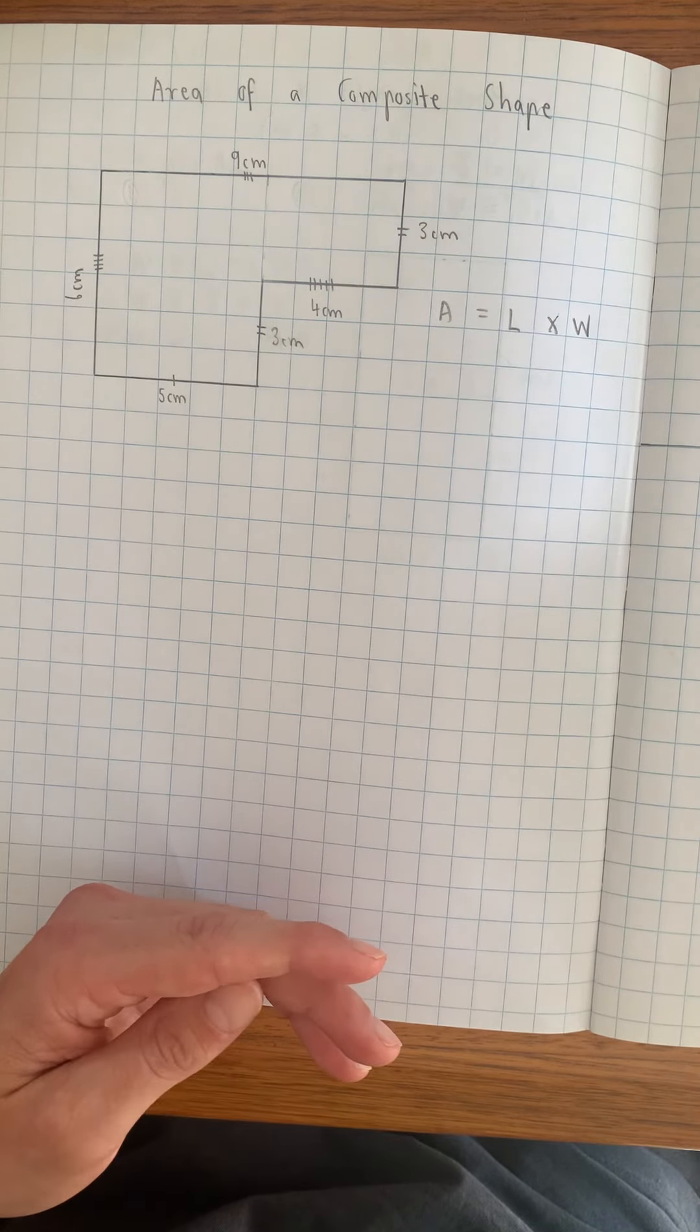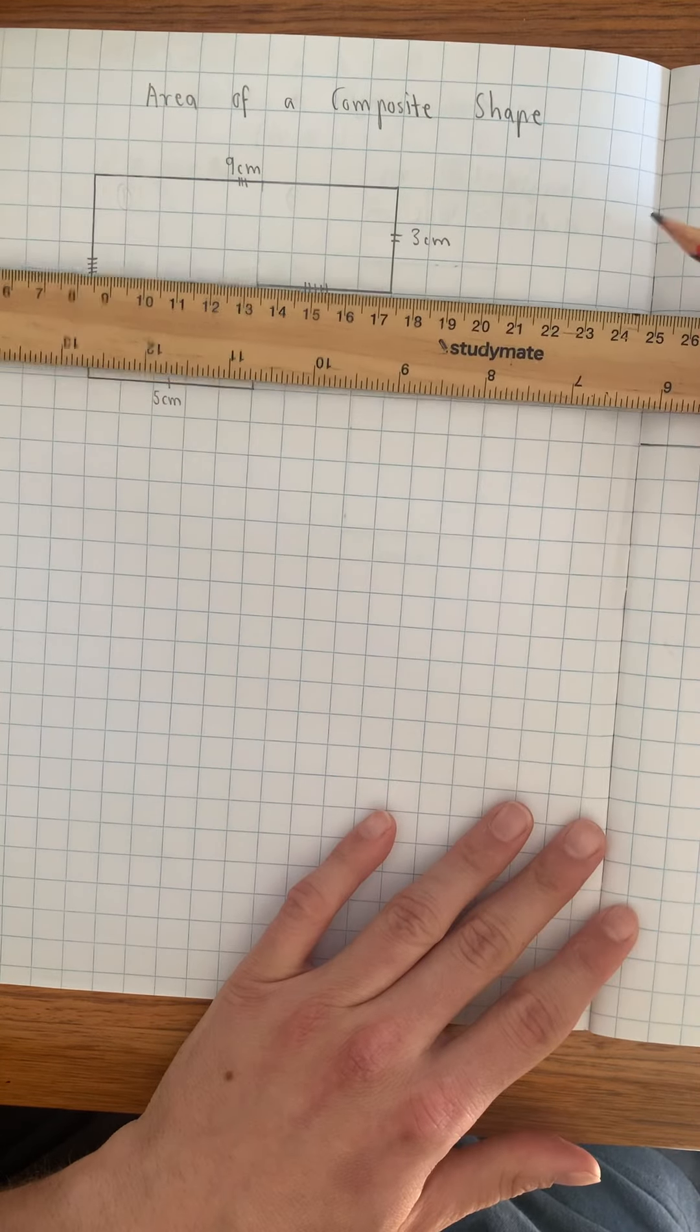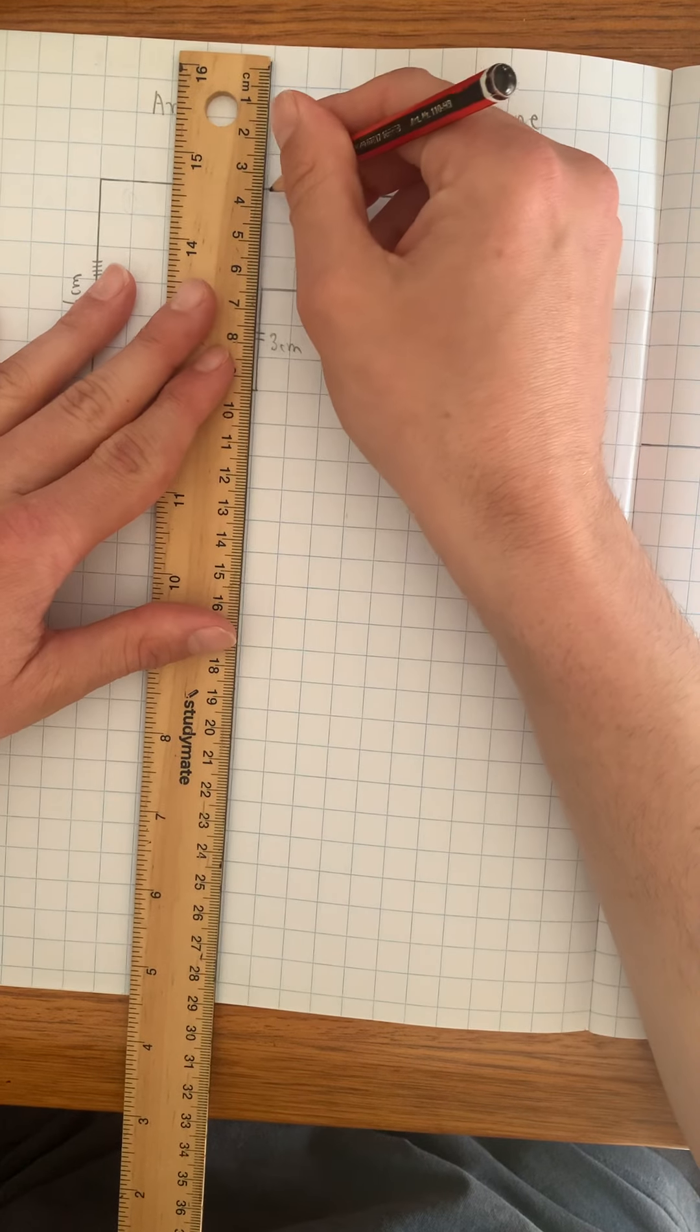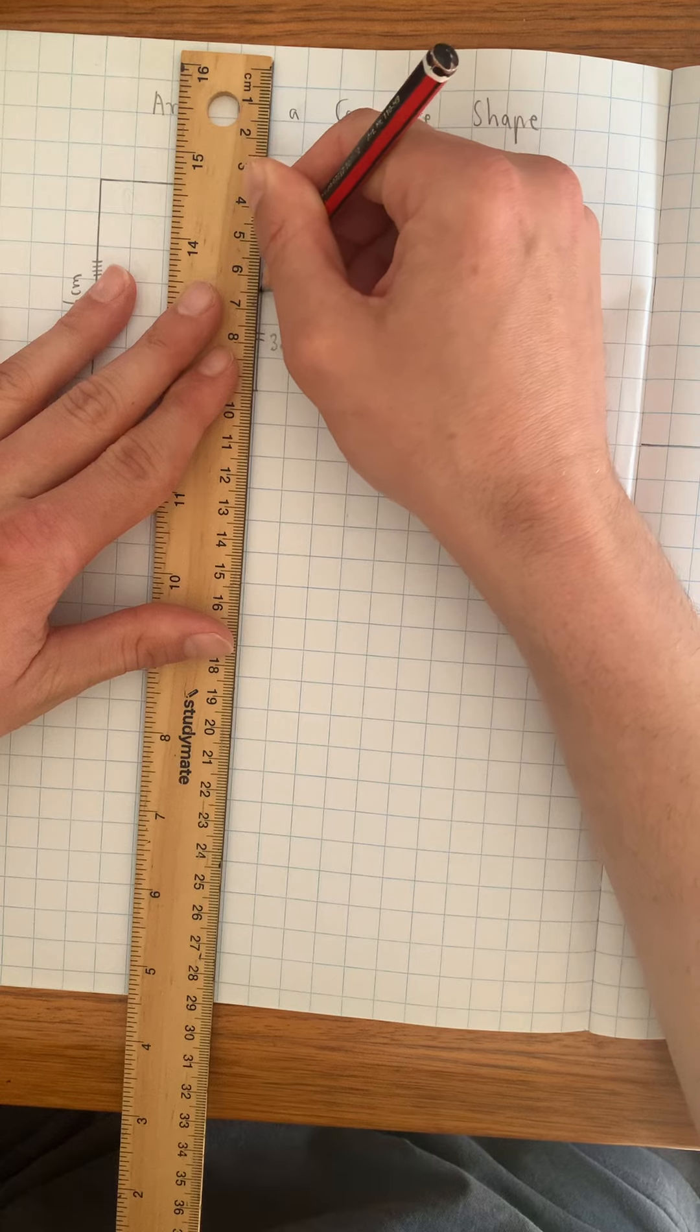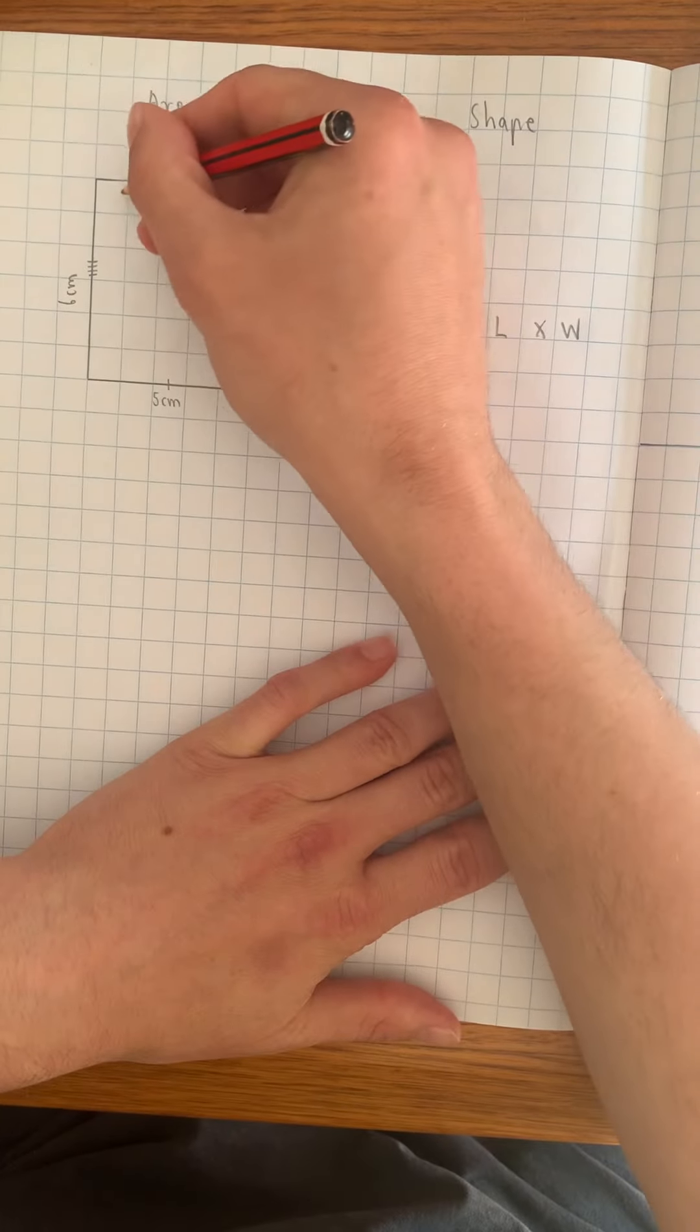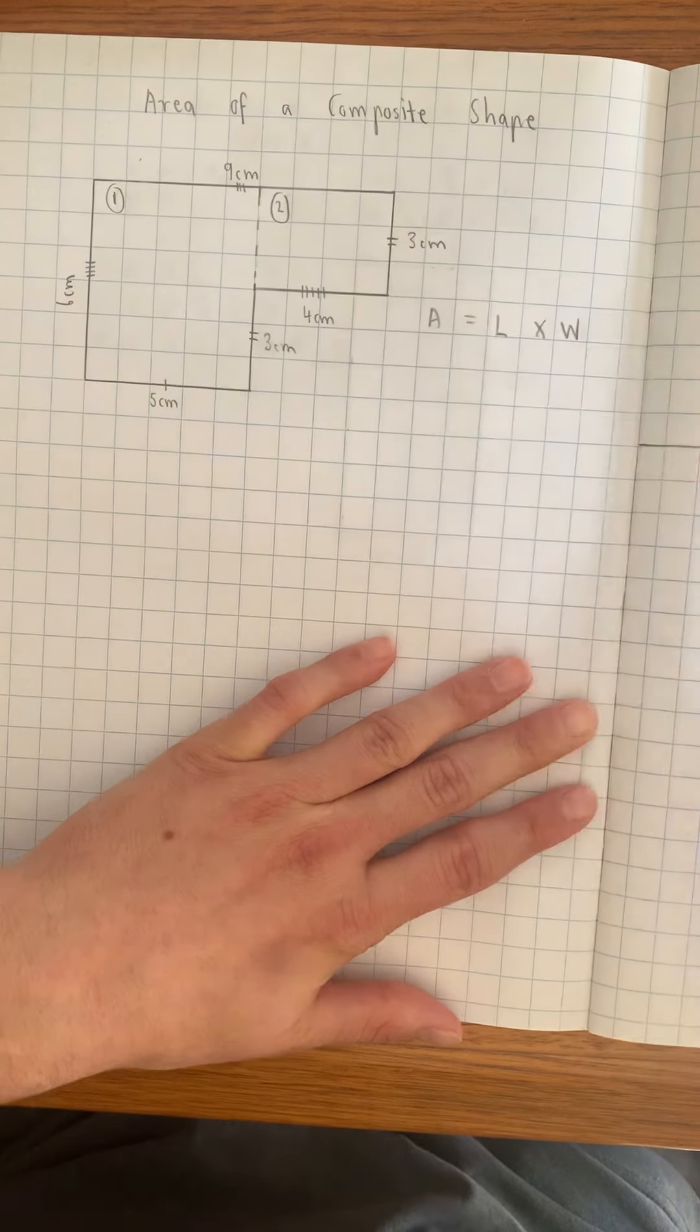I'm going to turn this shape into two rectangles. Now I can either go this way or this way. I'm going to go this way for no particular reason. And what I'll do is I'll draw like a little dotted line here. So now what I've got is two rectangles, shape number one, shape number two.